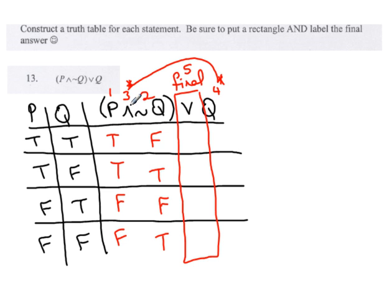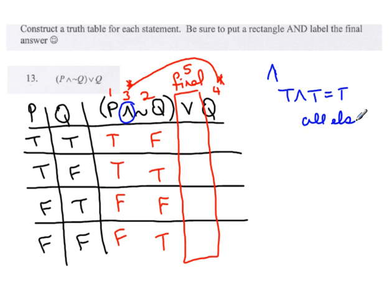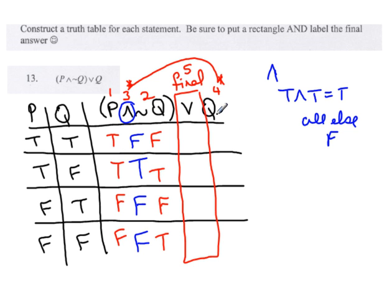Now for column three — the conjunction. The conjunction rule: true and true is true, all else is false. Looking for any true-and-trues: in row two I have true and true, so that's true. All else are false. Now move to the right side — column four is Q: true, false, true, false.